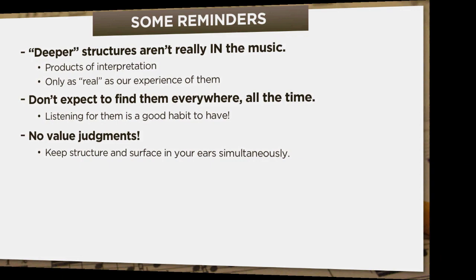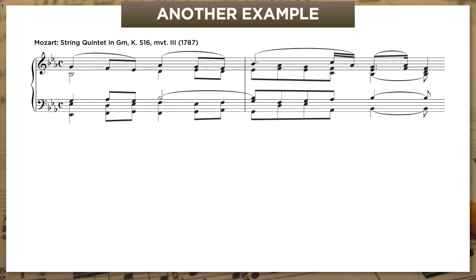So let's dive in with another example. This is the opening of the slow movement from Mozart's G minor string quartet — a fantastic piece, by the way. Here we're in E-flat. I'm going to play it twice, and I want you to notice what the musical surface is like, how does the melody move, how often do the chords change, but I also want you to listen for deeper processes — broader harmonic motions, long-range melodic connections. Here it is again.